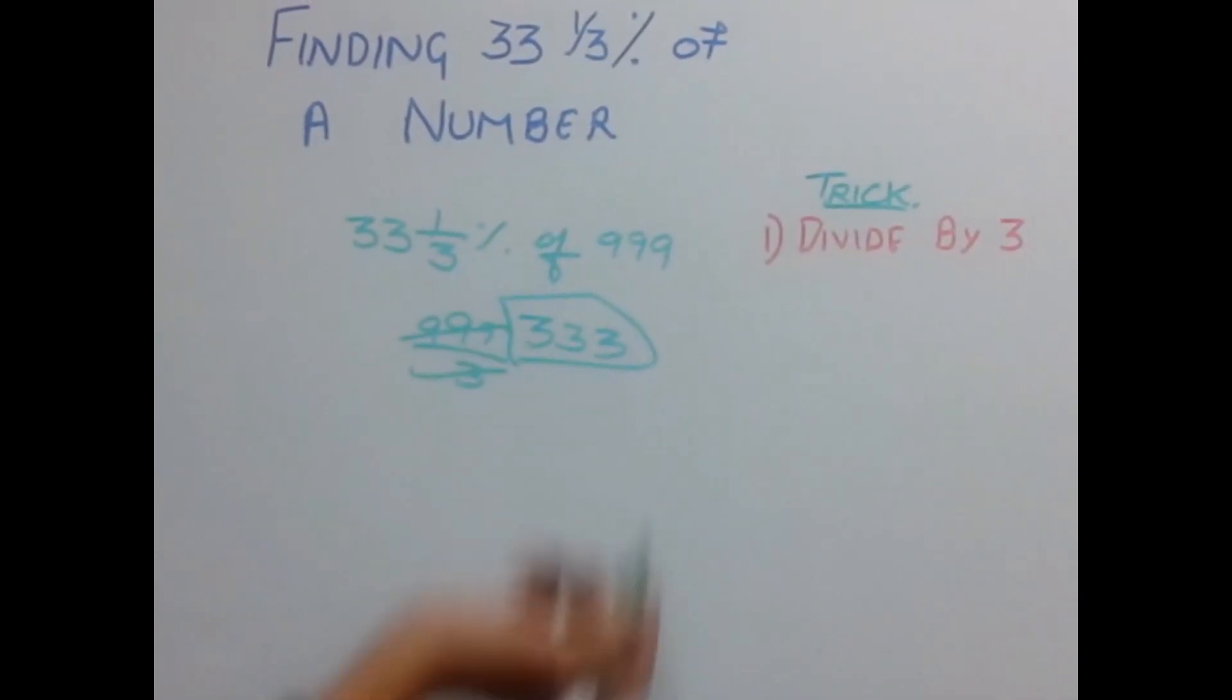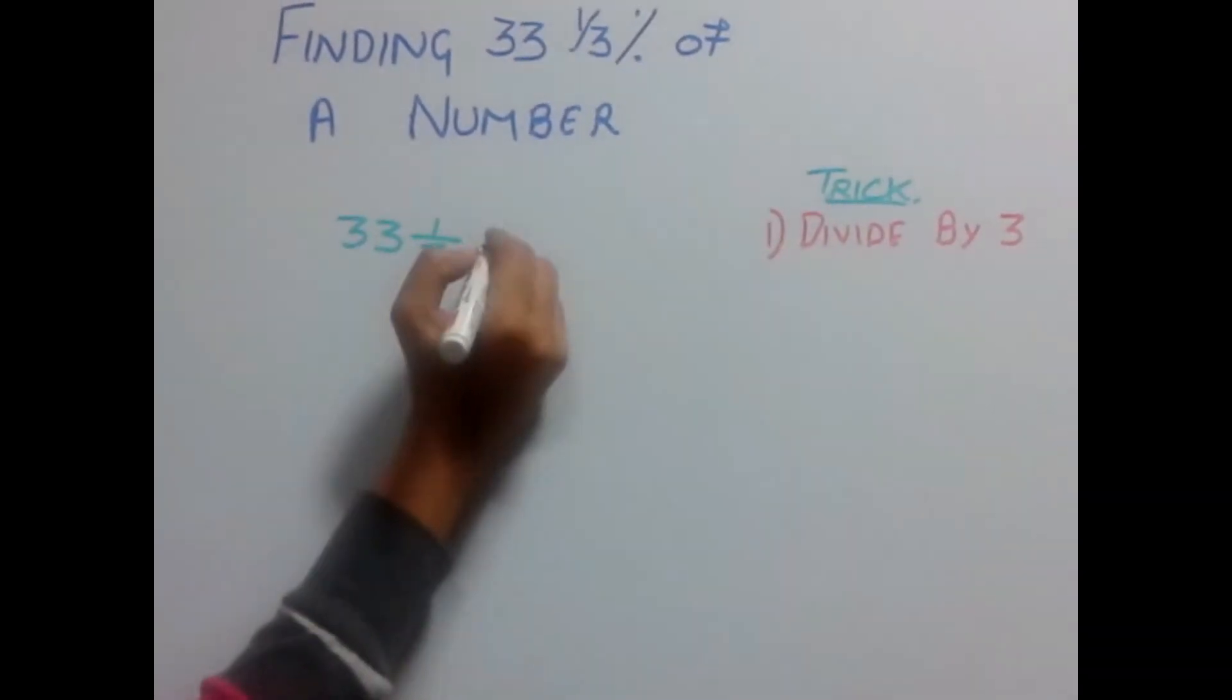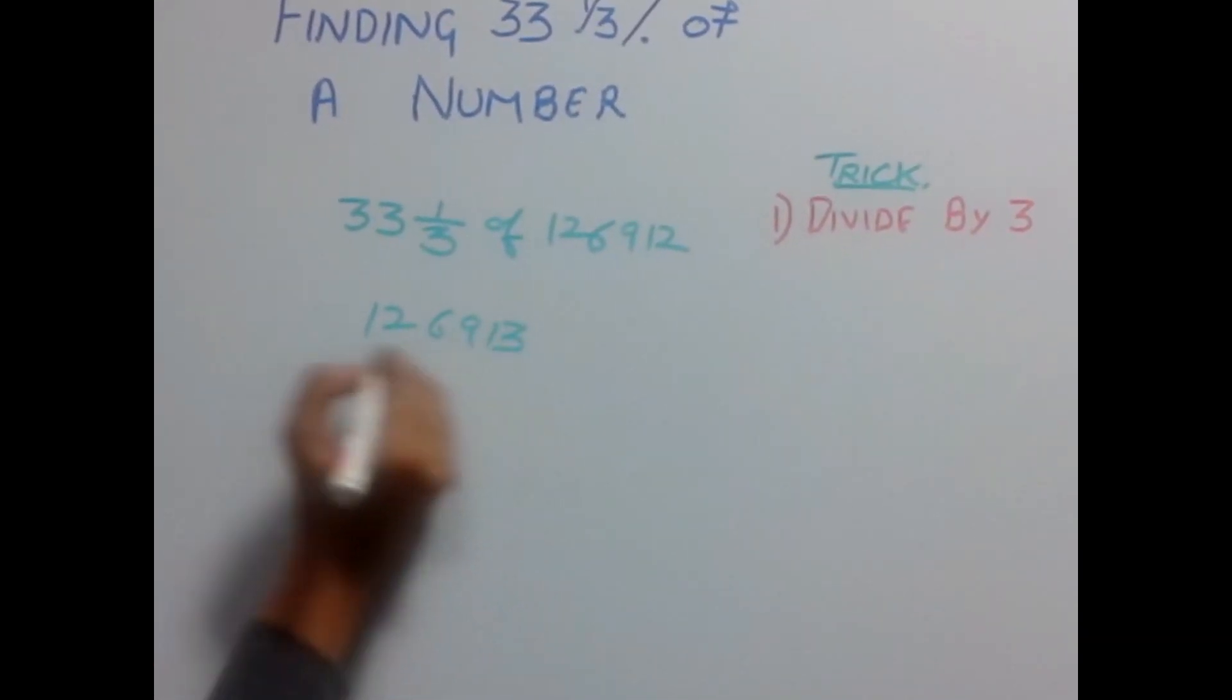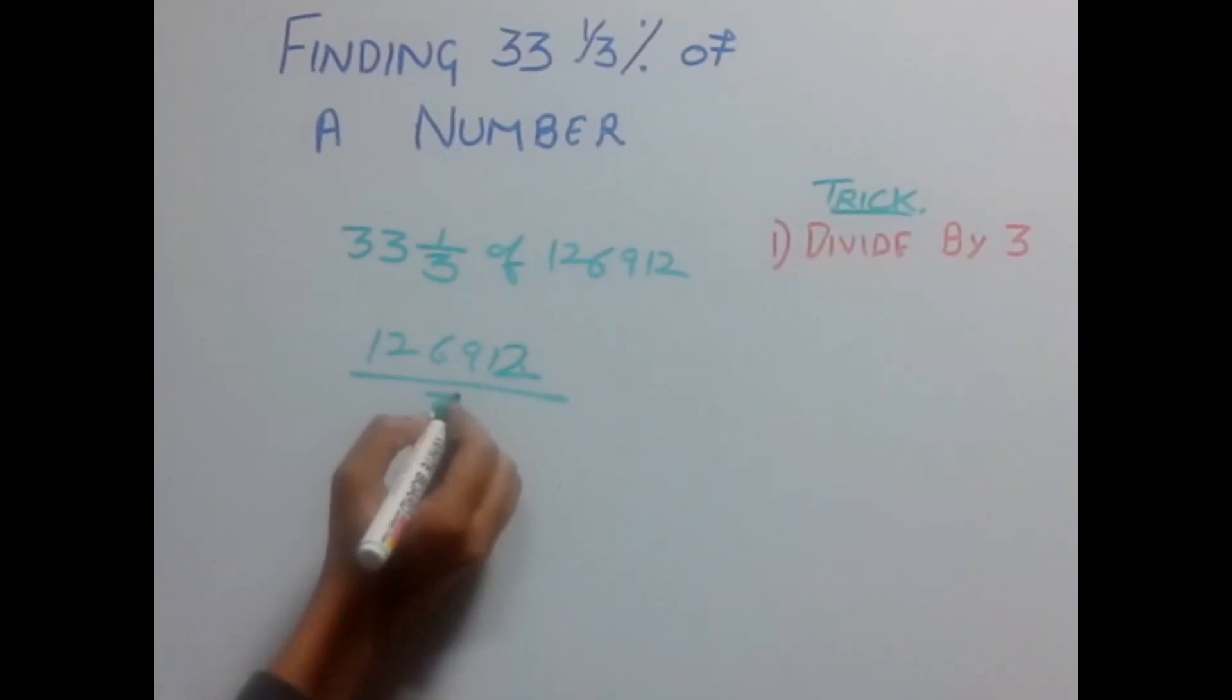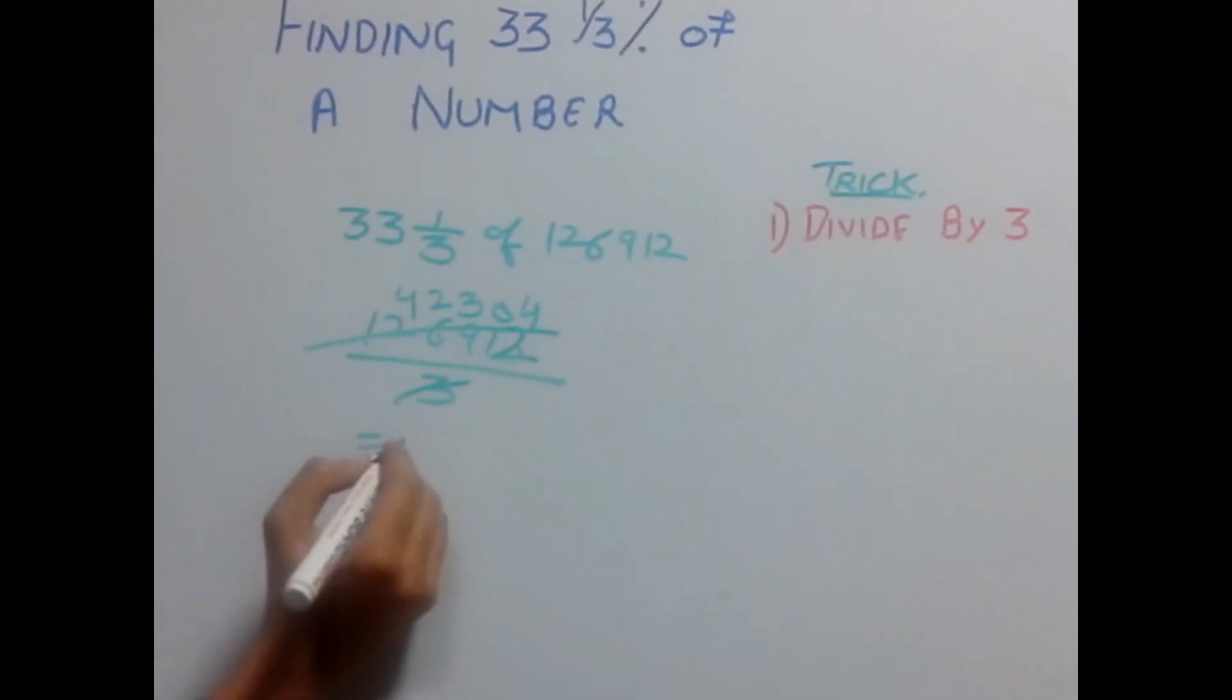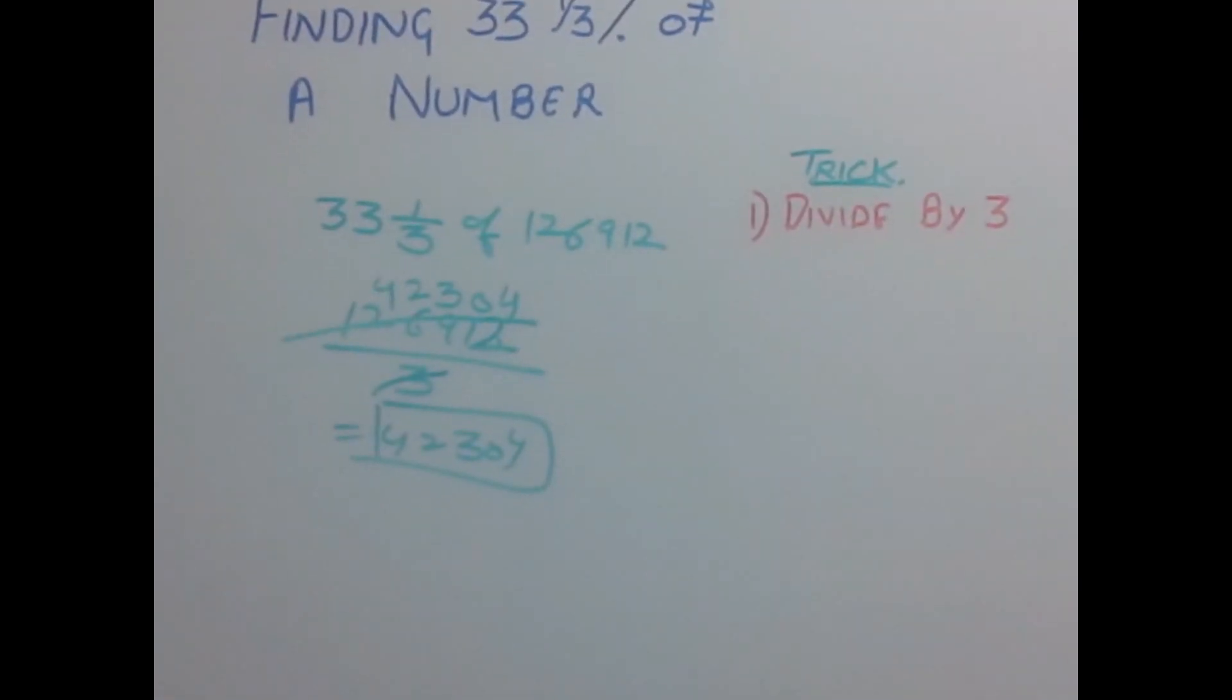Let's find out 33⅓% of 126912. Simply divide this number by 3, which gives you 42304. So 42304 is 33⅓% of 126912.